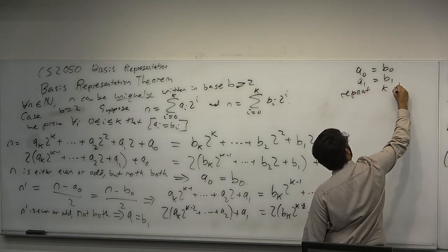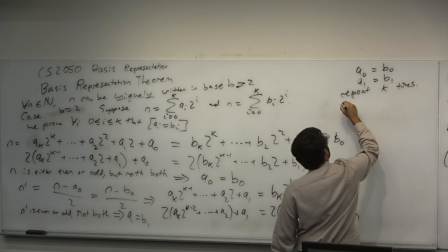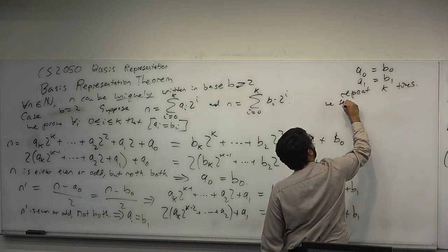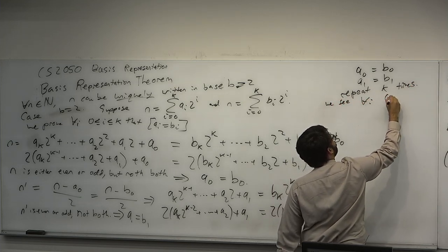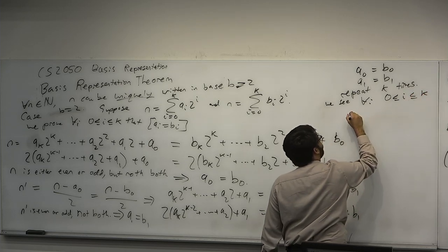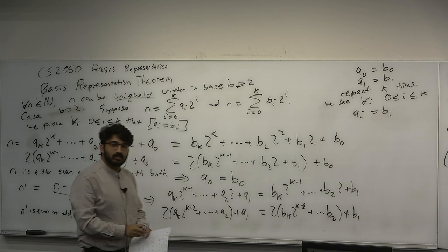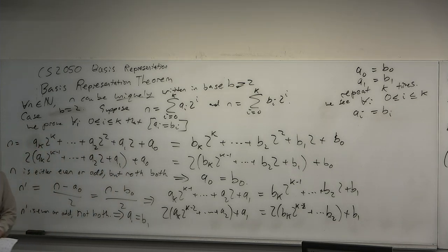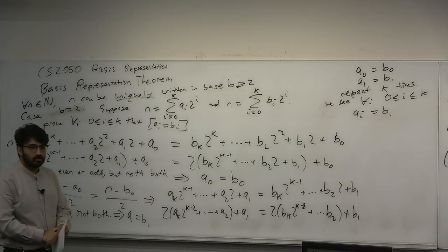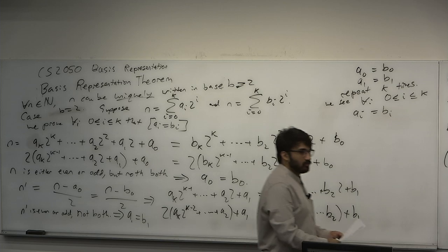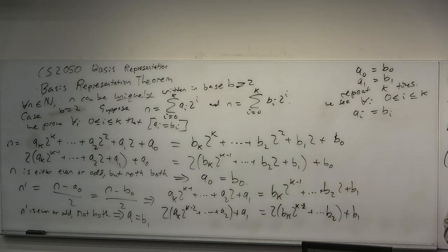Okay, k times. Then we see, for all i, 0 less than or equal to i less than or equal to k, that a_i is equal to b_i. So if there did exist two representations of the same number, it turns out they're the same representation. They're not distinct. Kind of an elementary proof of something you may have already obviously known. Questions on that? Excellent.